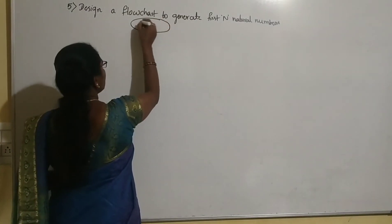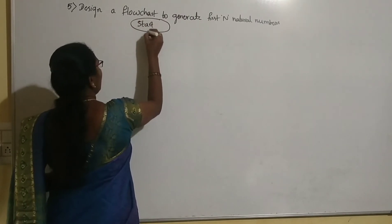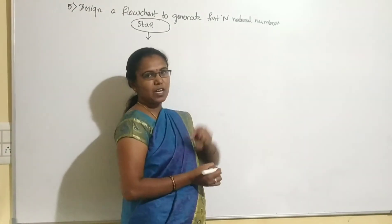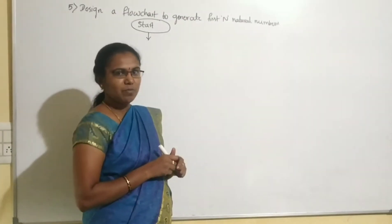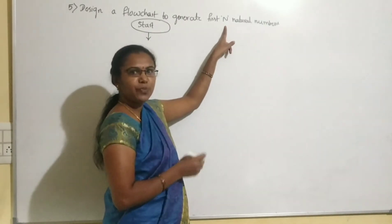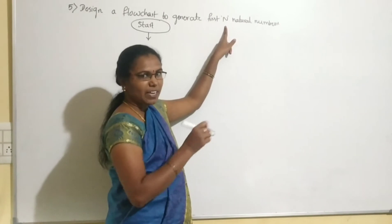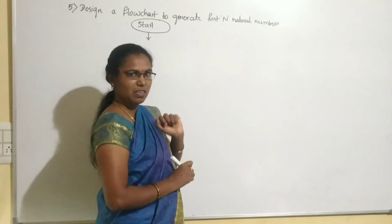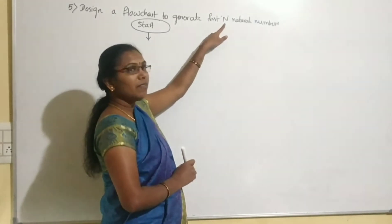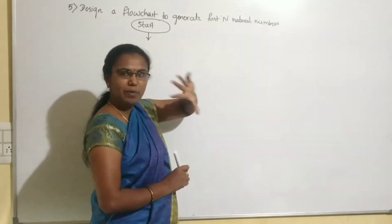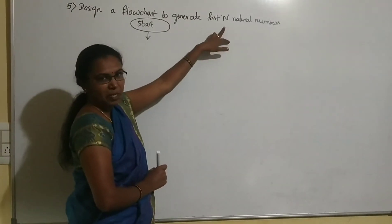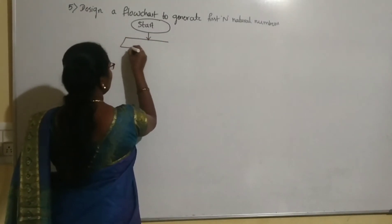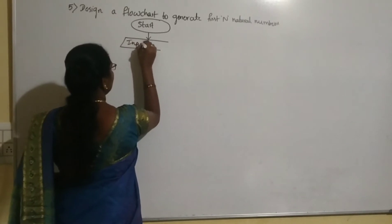Start — represented using the oval symbol. After that, we read the input: N, which is how many natural numbers we want to print. If N = 5, it will print 1, 2, 3, 4, 5. If N = 10, it will print first 10 natural numbers. The input variable N is read using the parallelogram symbol.